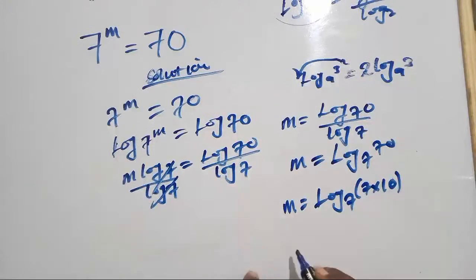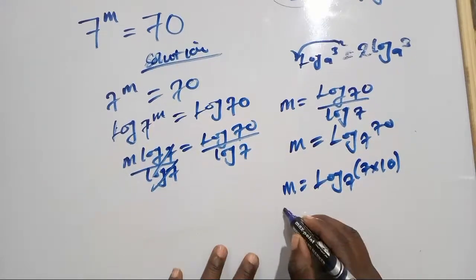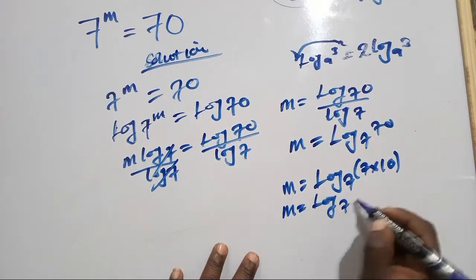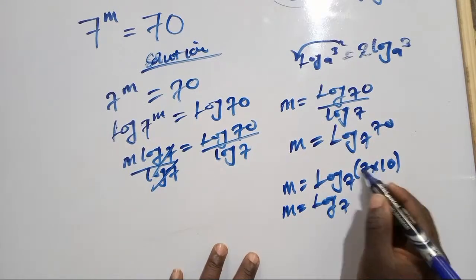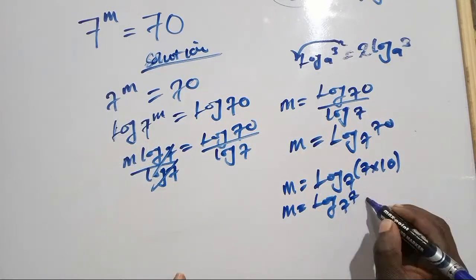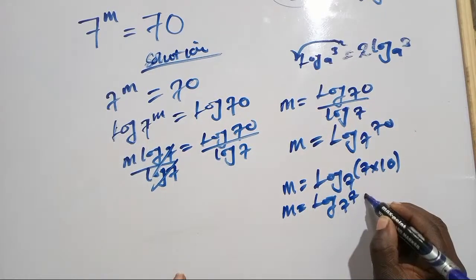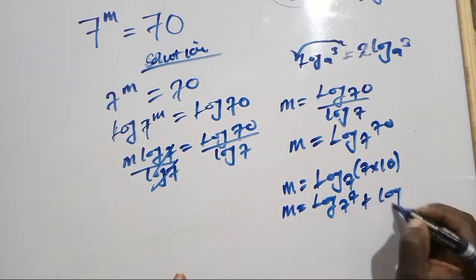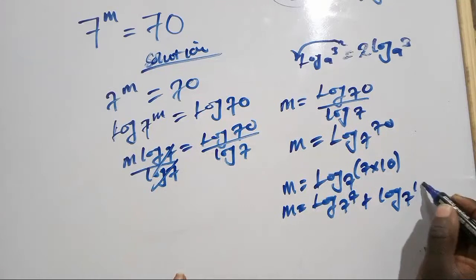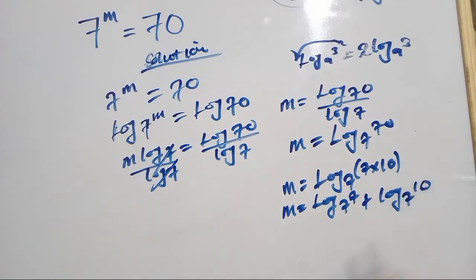Because 7 multiplied by 10 is 70, when you are multiplying inside a logarithm, that means there's addition. Using the addition rule of logarithm, m will be equals to log base 7 of 7 plus log base 7 of 10.